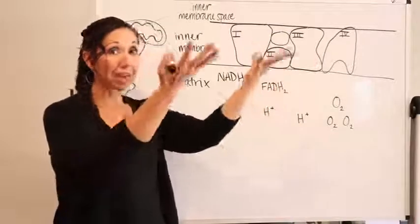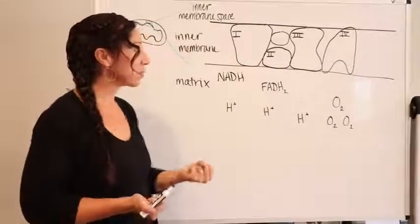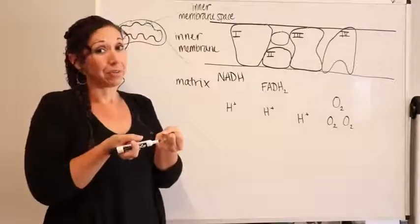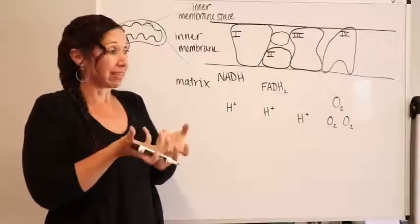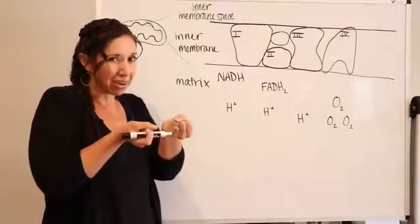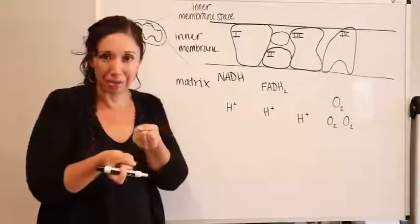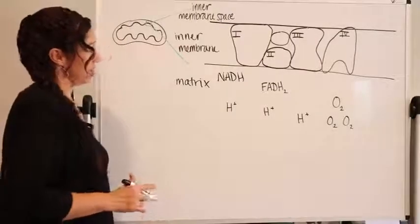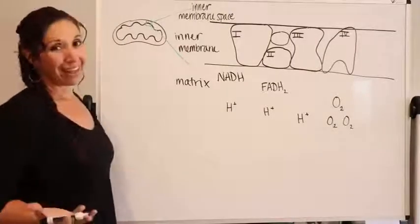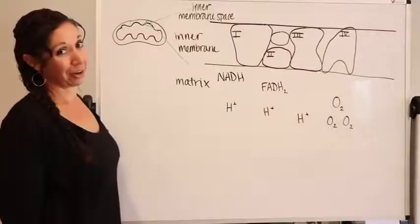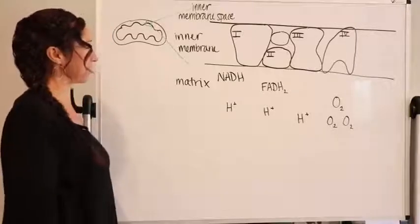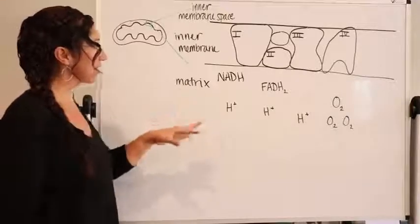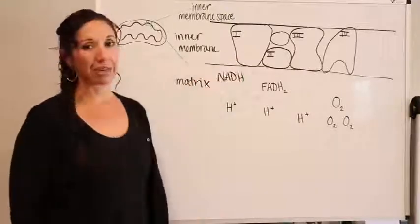Oxygen is like, 'Please come, I want you here.' So oxygen is another electron acceptor — and if it's accepting electrons, that's your redox reaction right there. So electrons are going straight to oxygen. The electron transport chain: NADH is hanging out in the matrix, sees protein complex one — this is its slide.